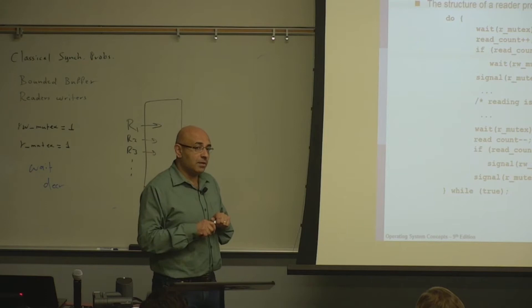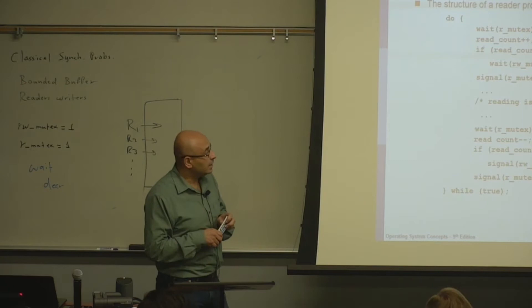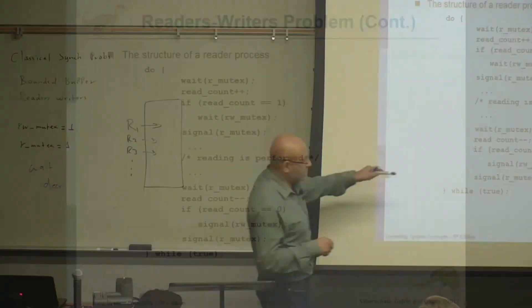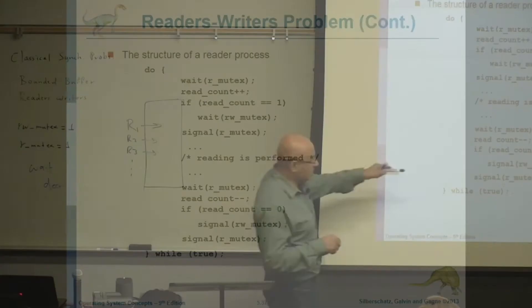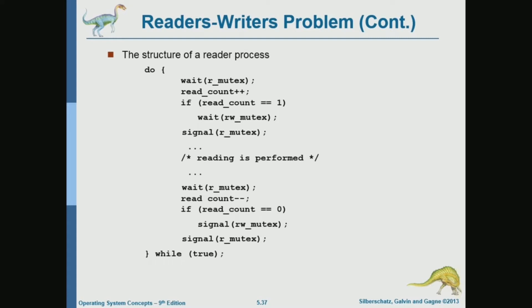Only the first reader has to worry about checking whether there is a writer. When the reader is done, it checks if read count equals zero and releases the RW semaphore, meaning writers can now access the buffer. It's like the first person into a room turns the lights on, and the last person to leave turns the lights off — the last reader releases the buffer for writers.